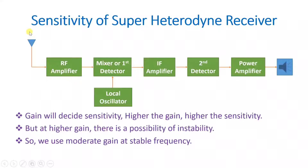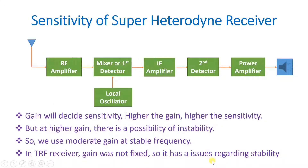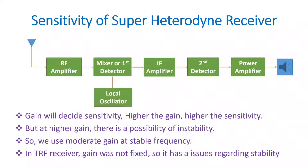In a TRF (tuned radio frequency) receiver, gain is not fixed, which causes stability issues. In the super heterodyne receiver, we use some fixed gain. If the signal amplitude varies, we can apply Automatic Gain Control (AGC) to provide a constant amplitude signal at the output side. This is how we control the gain of the system using AGC.